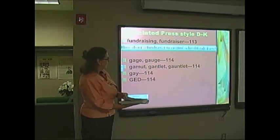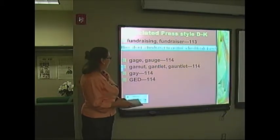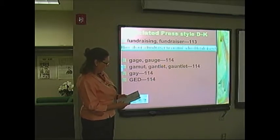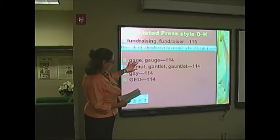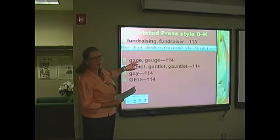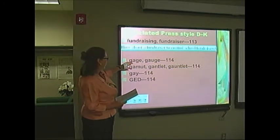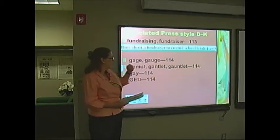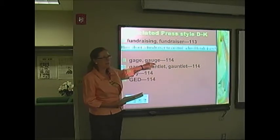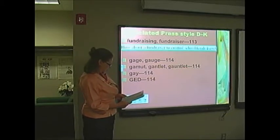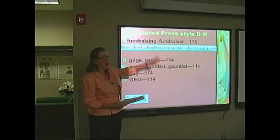Now we go to the G's. We have gauge and gage — again, they sound alike. Gage is a security pledge; gauge is the device that measures something. At the bottom of page 114, the last entry: we have gamut, gantlet, and gauntlet. A gamut is a range of things — his emotions ran the gamut, from scared to excited.